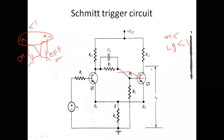This on/off action is going to take place automatically. They are going to say it's an on-off state. This on-off state will occur only if the circuit loop gain is less than one.